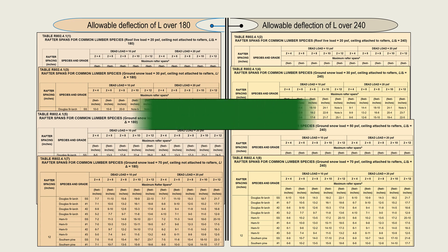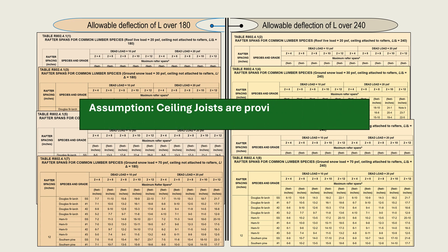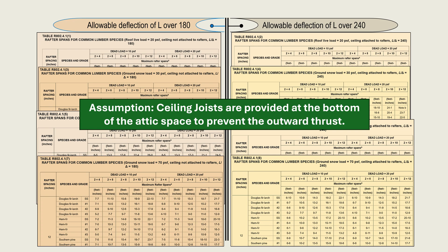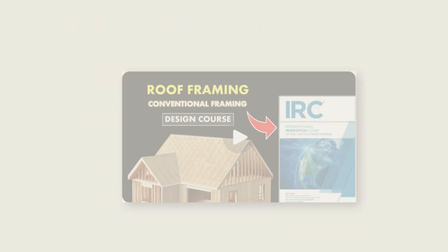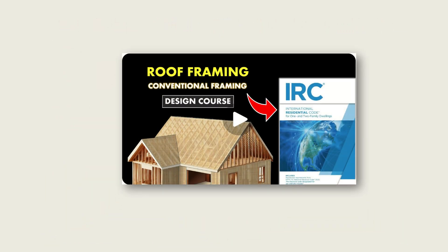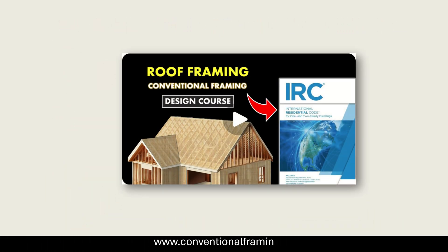The rafter tables are based on the assumption that ceiling joists are provided at the bottom of the attic space to prevent the outward thrust. The code also allows ceiling joists or rafter ties to be provided further up the attic space, but this requires adjustments. If you wish to learn more about the thrust forces resisted by ceiling joists and the application of rafter ties, please check out our complete conventional IRC roof framing design course at www.conventionalframing.com.